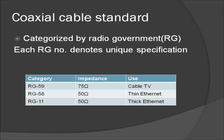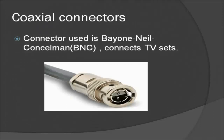Coaxial cables are categorized by their RG ratings. Each RG number denotes a unique set of physical specifications including wire gauge of the inner conductor and thickness, and each cable is adapted for specialized functions as shown in the table. To connect coaxial cables to devices we need coaxial connectors. The most common connector used today is the BNC connector, which is used to connect the end of the cable to a device such as TV sets. The cable TV uses RG-59 coaxial cables, and coaxial cables are also used in Ethernet LANs because of their high bandwidth and consequently high data rate.